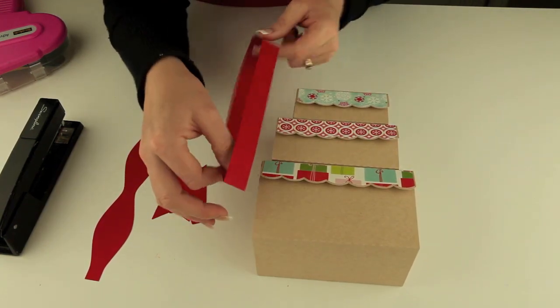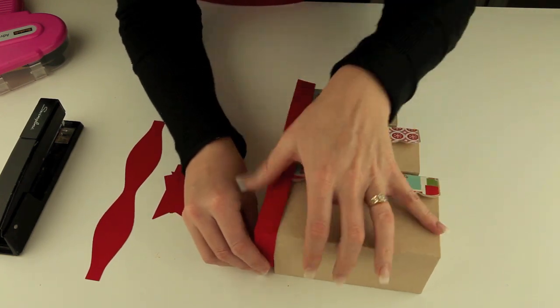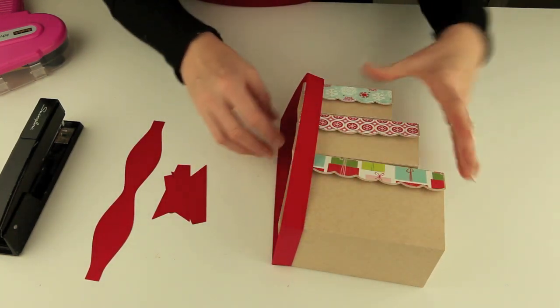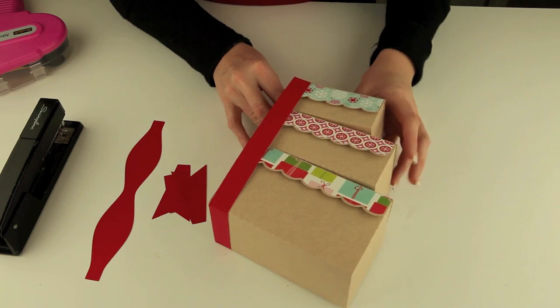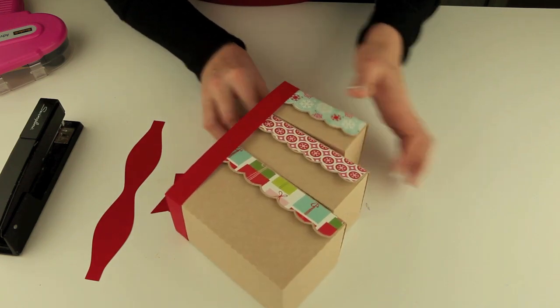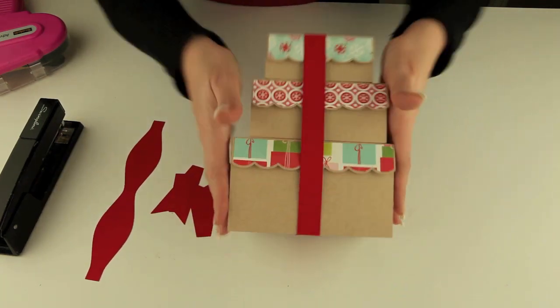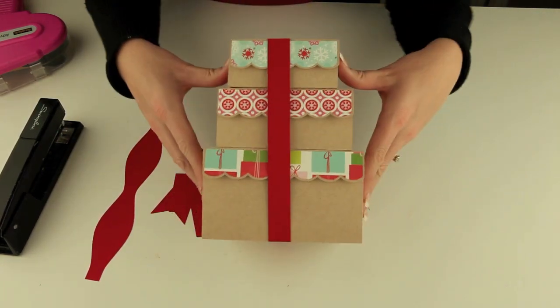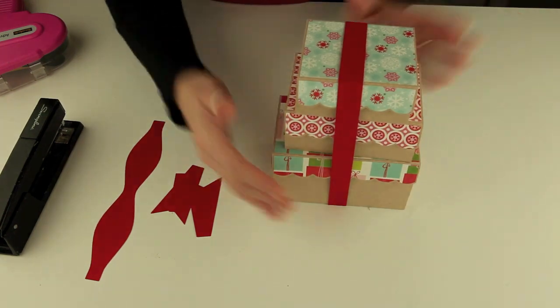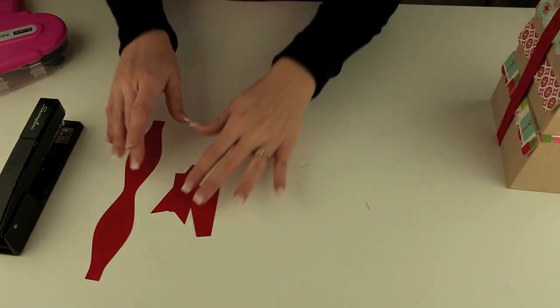Let me just lay those down and we'll slip this band right over the whole set of boxes. Once you kind of center that, that's what your little stack should look like. So I'm going to set that aside and we'll make our little bow real quick.